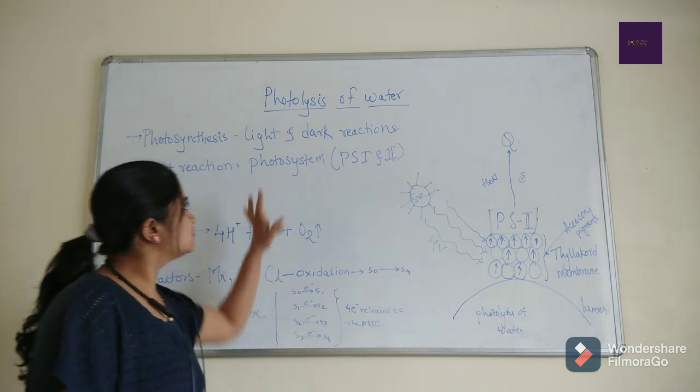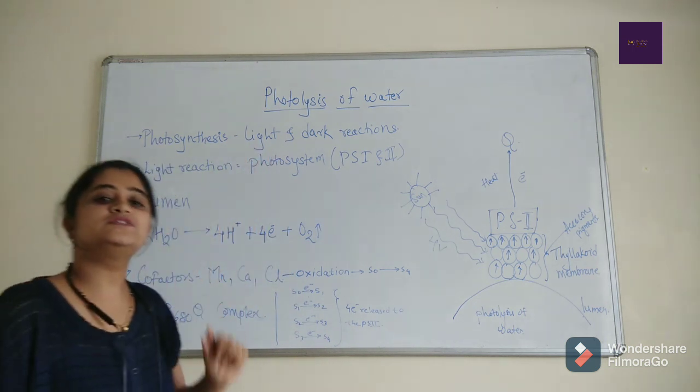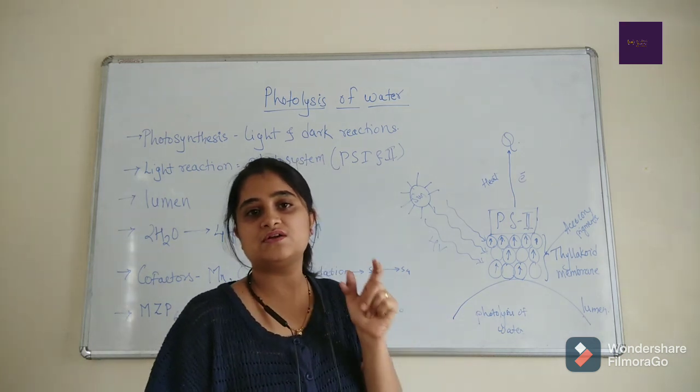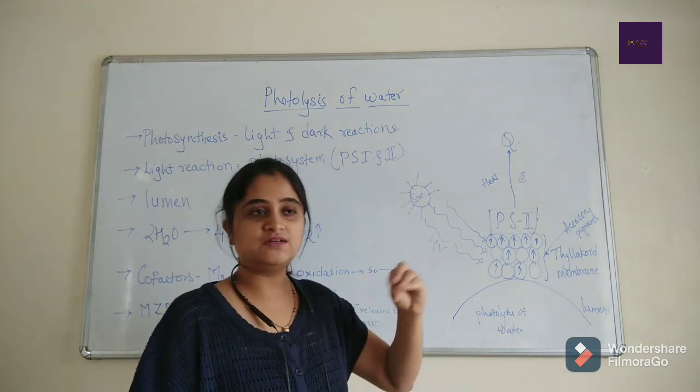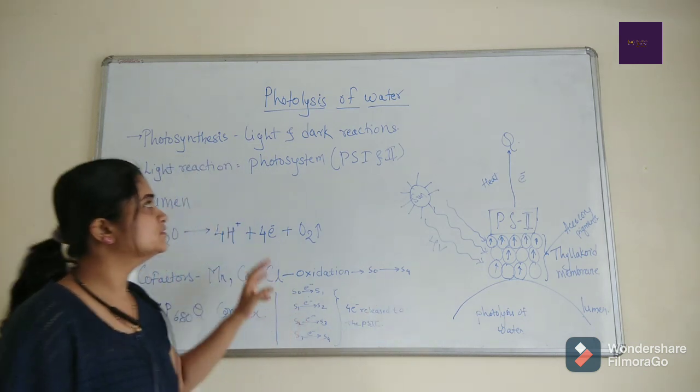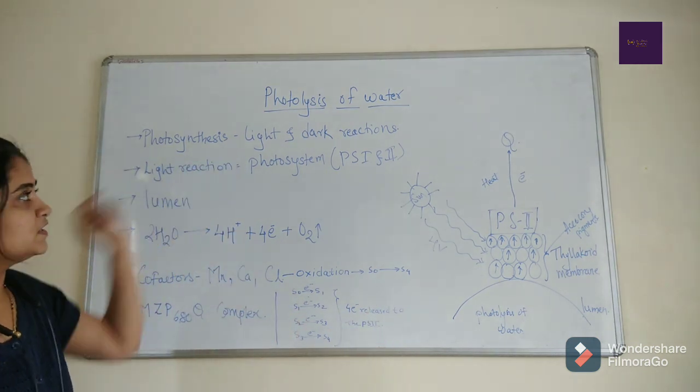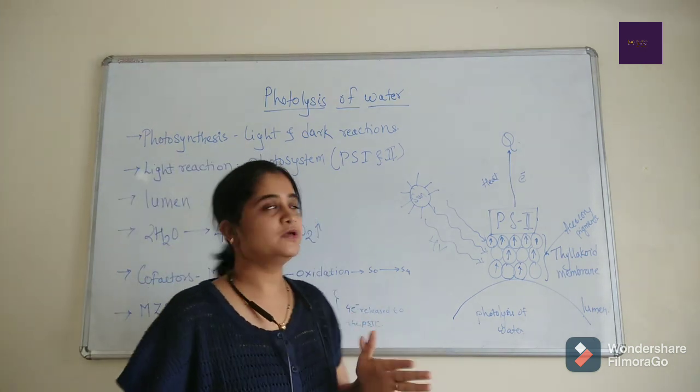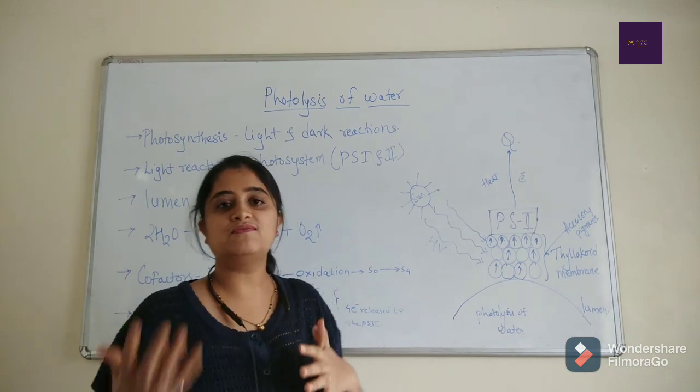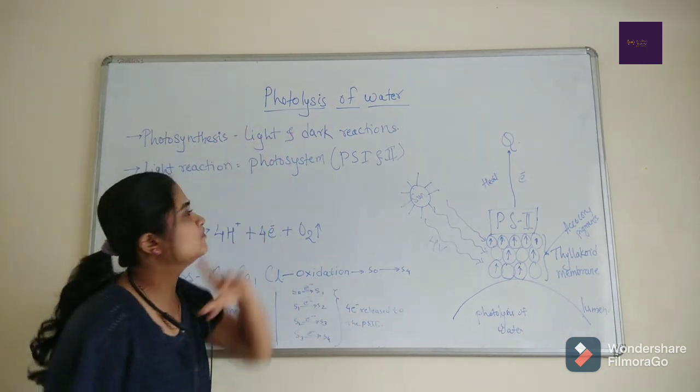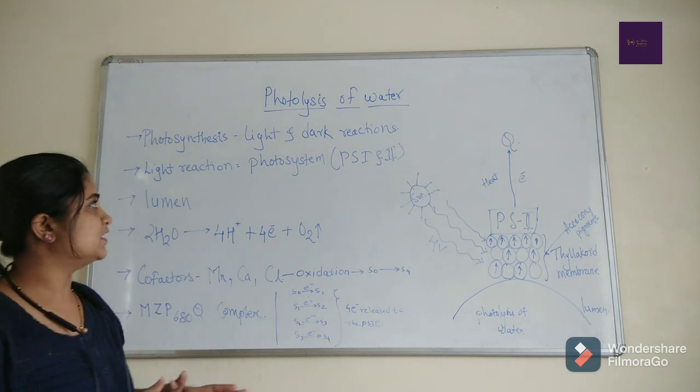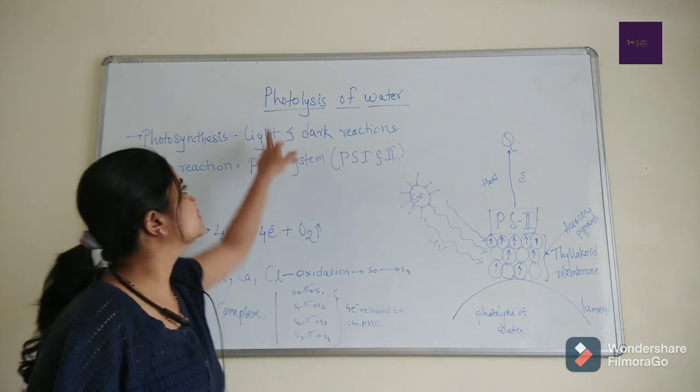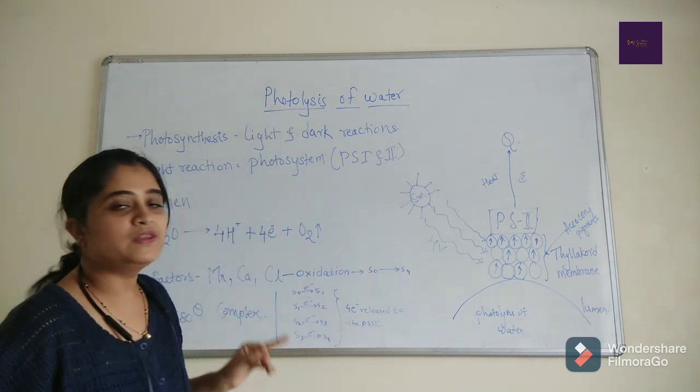So let's start. The photolysis of water is also called photo-oxidation of water, and from that process molecular oxygen can get liberated from the lumen region. Lysis means breakdown of water by using the photon, photon means light energy, into proton, electron and oxygen. That is called photo-oxidation of water.